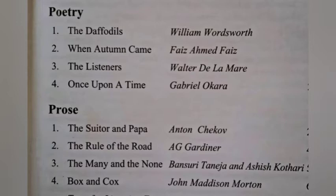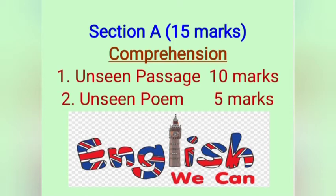In the prose section you have: number one, 'The Sweater and Papa'; number two, 'The Rule of the Road'; number three, 'The Many and the None'; number four, 'Box and Cox'. Now let's move on to the distribution of marks. The syllabus is divided into five sections.